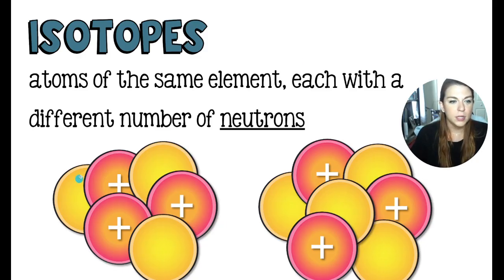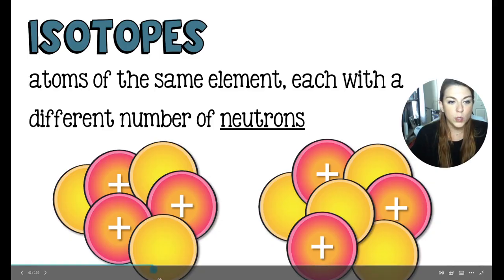Here we have two different nuclei. Obviously, they're lithium because we have three protons. That's what makes it lithium. It's number three on the periodic table. Here we have lithium with three neutrons, and here we have lithium with four neutrons.